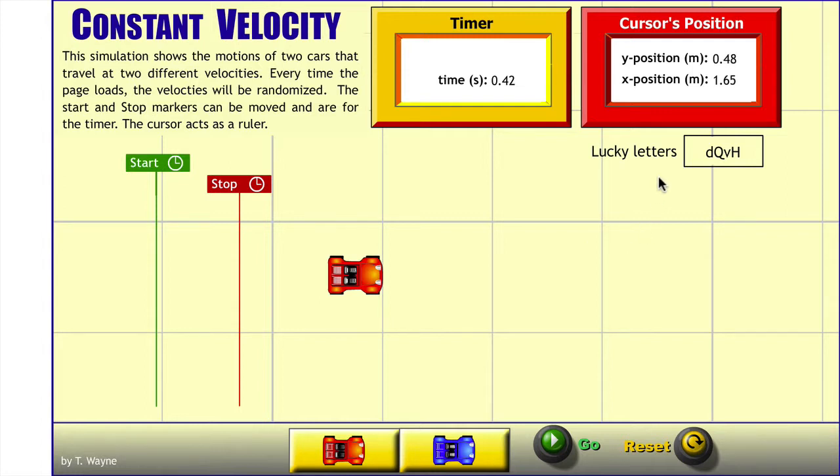Now over here on the top right beneath the red box, there's a little thing that says lucky letters. These are letters, not numbers, so you won't have the number zero, but you'll have the letter O, either uppercase or lowercase. These lucky letters are important, make sure you write them down, they'll be used later to test your results virtually.